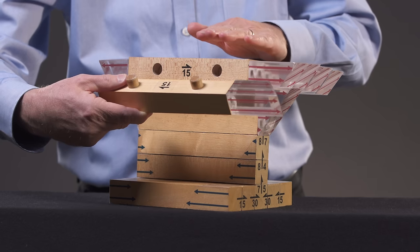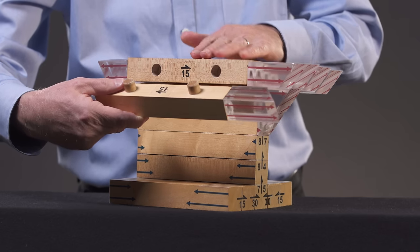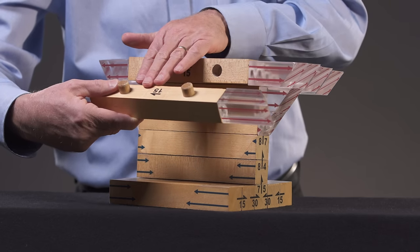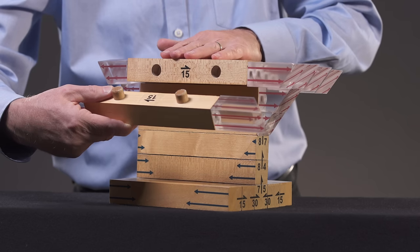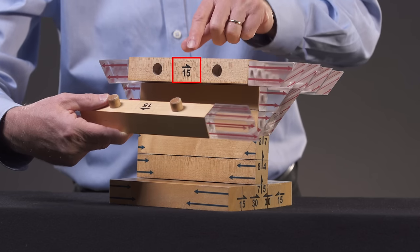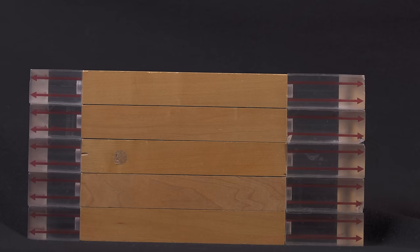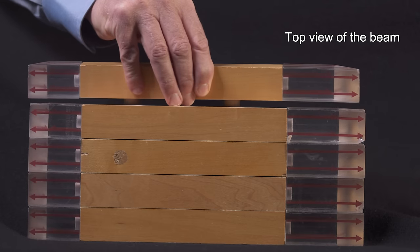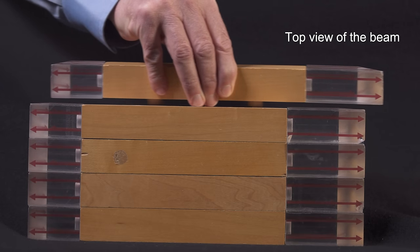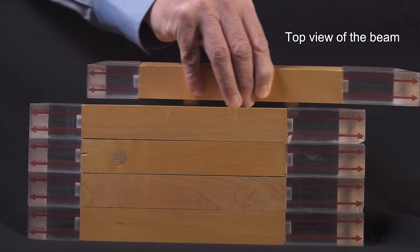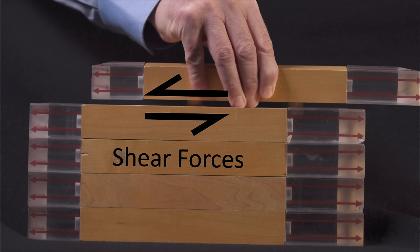At the same time that the beam is exerting a force of 15 units on the fiber, the fiber is exerting an equal and opposite force on the rest of the beam, as shown by this arrow. As you can see, the forces between the fiber and the rest of the beam act parallel to the cut, and so we call them shear forces, and we represent them using arrows that have a single-sided head.